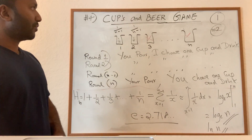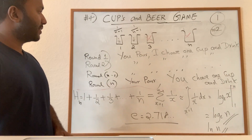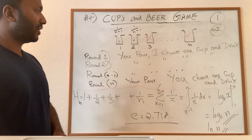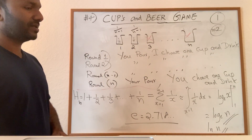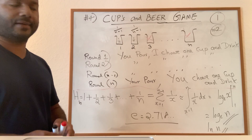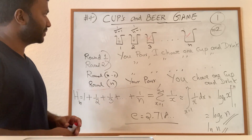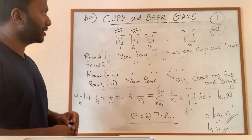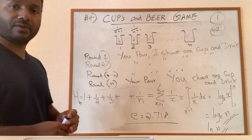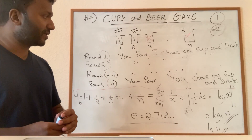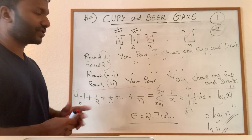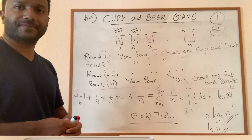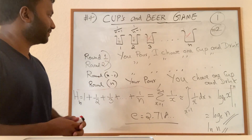That's all about the Cups and Beer Game and the harmonic series. What we're going to see next is some well-known algorithms for sorting.